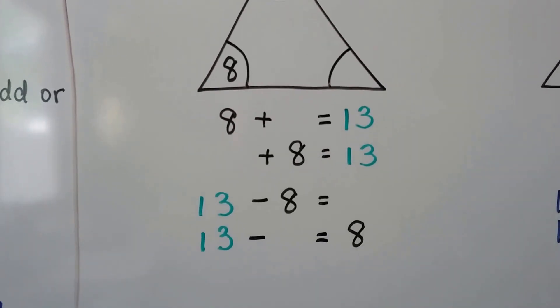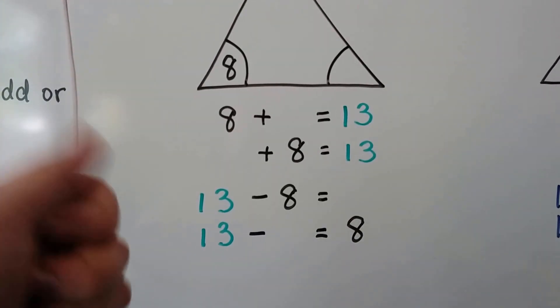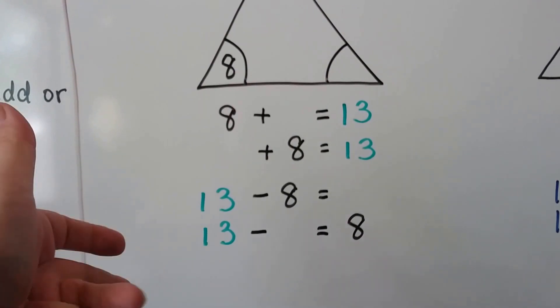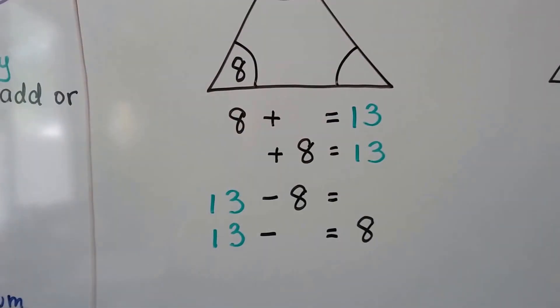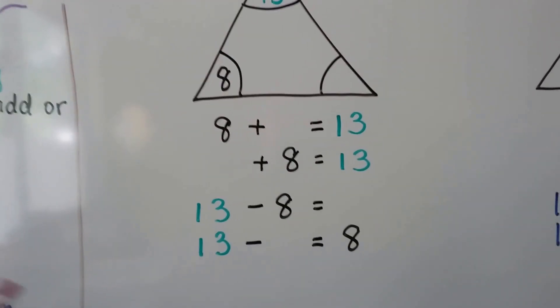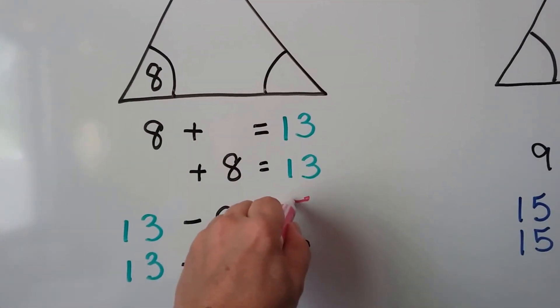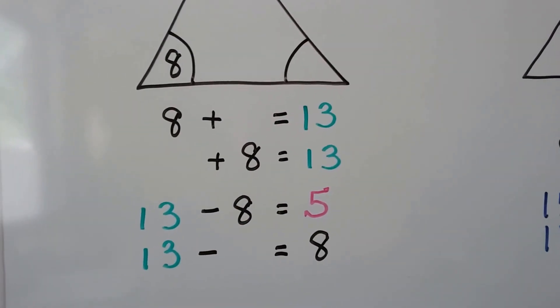we say thirteen, twelve, eleven, ten, nine, eight. That's five. So thirteen minus eight equals five. We know that the missing fact must be a five.